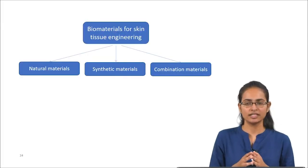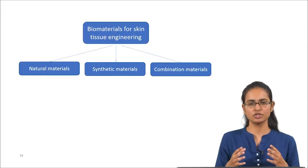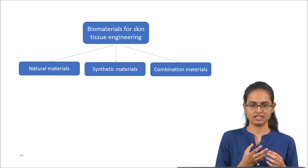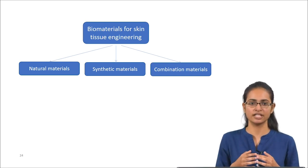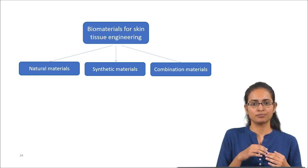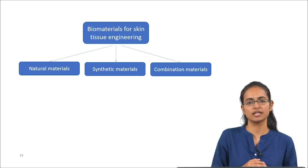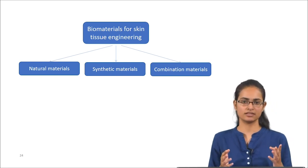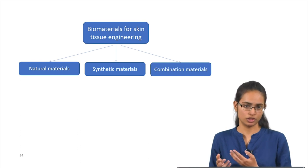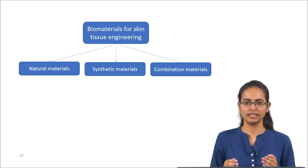From here on we will discuss the major components of the tissue engineering triad — the materials, the cells, and the signals required for skin tissue engineering. Biomaterials used for skin tissue engineering can be classified as natural, synthetic, and a combination of the two. We will discuss each one of them in detail.